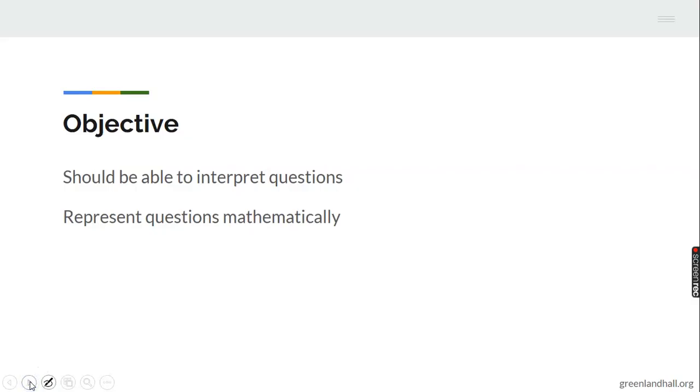Now the objective of our lesson today is that at the end of the lesson you should be able to interpret the question. Yes, it's very important. You understand what we are talking about. You should be able to know what each sentence and each word represents and how to put them mathematically. So these are the objectives for our lesson today. Let's get into it already boys and girls.